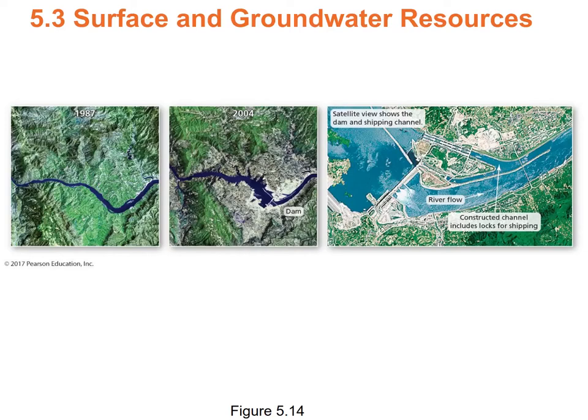The Three Gorges Dam is enormous, costing an enormous amount of money, and hundreds of thousands of people were permanently displaced by its construction. China views it as a win-win — the river floods regularly and historically the floods displaced more people and cost more than the dam. The rest of the world sometimes looks at it differently, noting there's a really big dam upstream from major population centers.